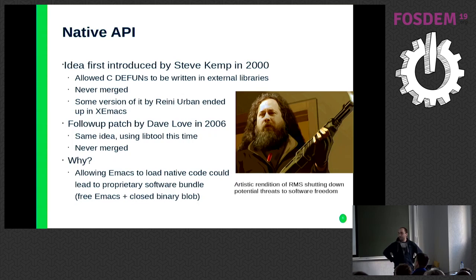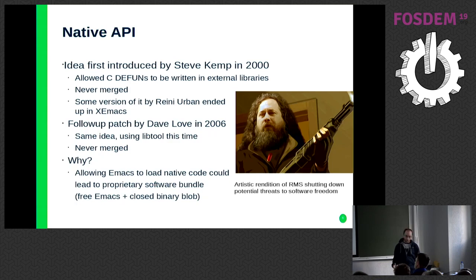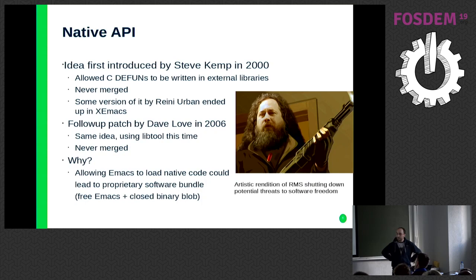The next way to go about it is to have a native API to interact with the system at the lowest level — a C API. This is not new. Some people have tried to do this for a while. Steve Kemp in 2000 allowed having C defuns. Defun is the way in Emacs core when you implement a new function in C — there's a macro called DEFUN that defines some stuff for you and makes a new Emacs Lisp function. He made a patch to allow loading dynamically C defuns this way, but it was never merged.